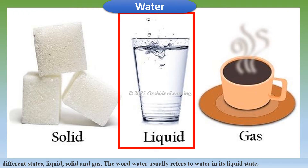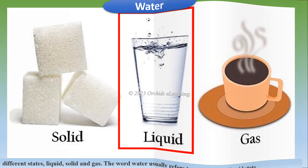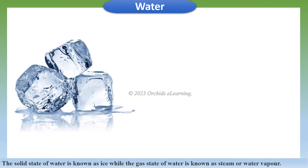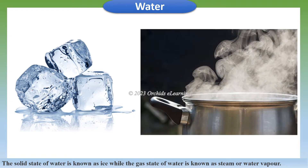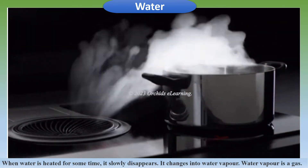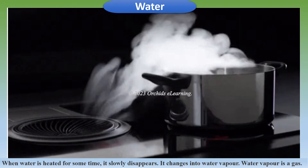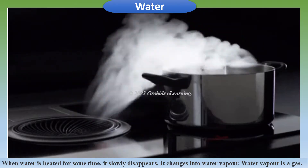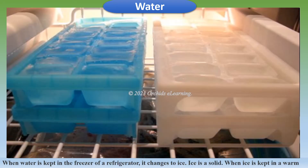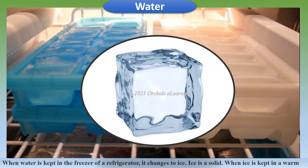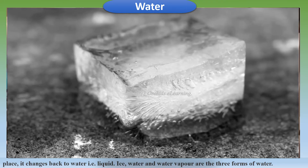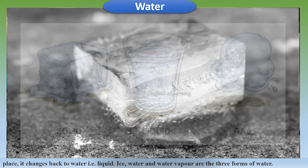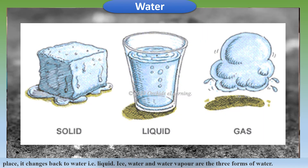The word water usually refers to water in its liquid state. The solid state of water is known as ice, while the gas state is known as steam or water vapor. When water is heated it slowly changes into water vapor. When water is kept in the freezer of a refrigerator it changes to ice. When ice is kept in a warm place it changes back to water. Ice, water, and water vapor are the three forms of water.